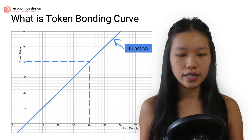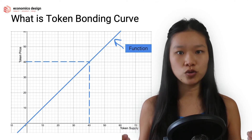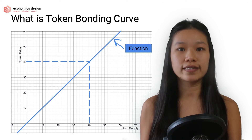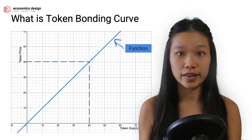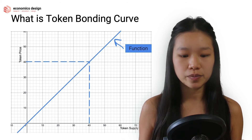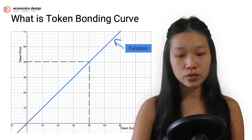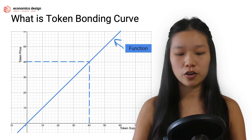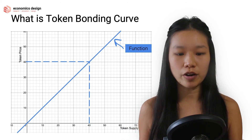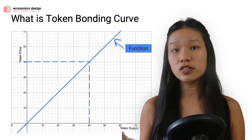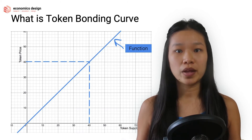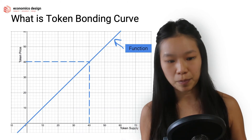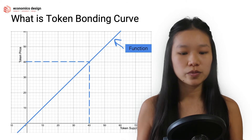It's very simple to use the line to understand the different relationships because we embed all the different properties into that line, and that's where the beauty of math lies. If we look at this curve on the graph, this function is just a straight line — a direct relationship of the supply and the price of these tokens.